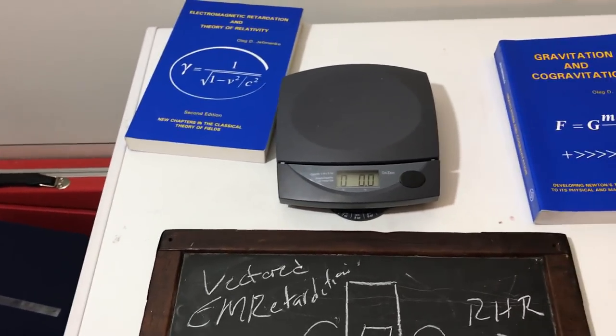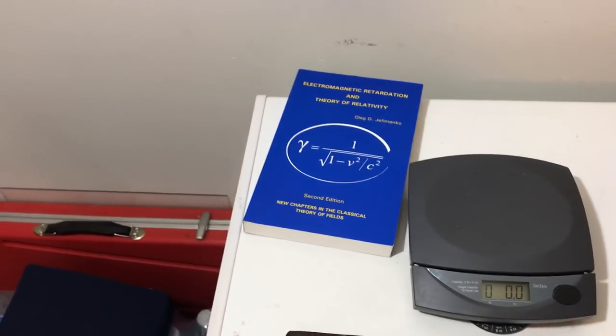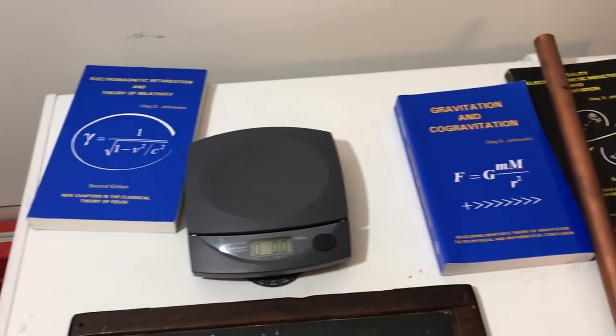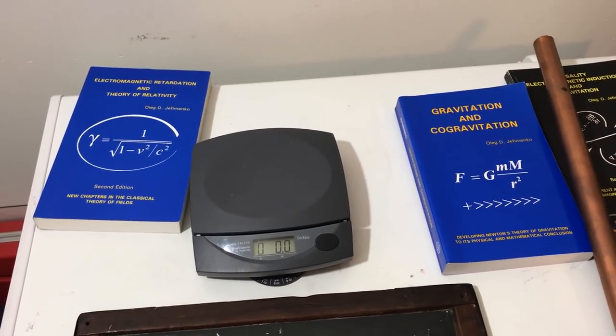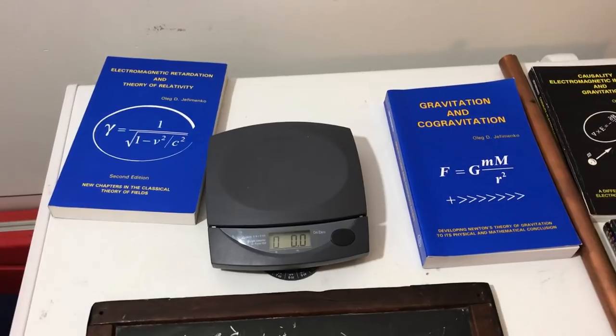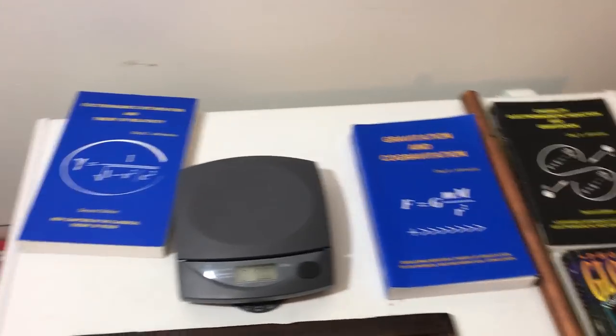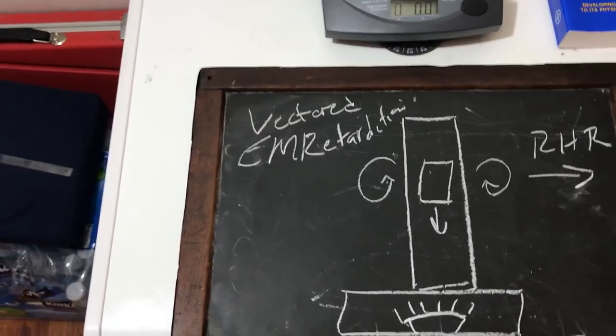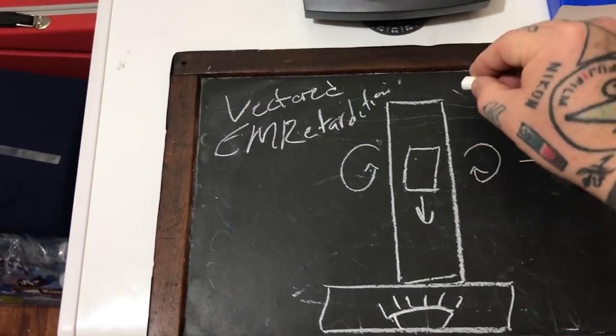What is actually going on is partially explained in electromagnetic retardation theory relativity by Dr. Oleg Jefimenko, Gravitation and Cogravitation, which is based upon an article by Oliver Heaviside, and a really good book, Causality, Electromagnetic Induction and Gravitation by Dr. Oleg Jefimenko. So we are using the copper pipe and the right-hand rule to cause EMR—what the common fool calls Lenz's law or eddy current.